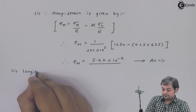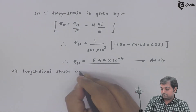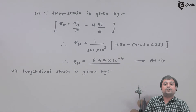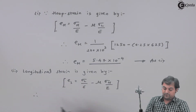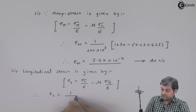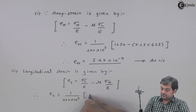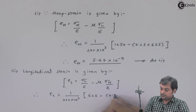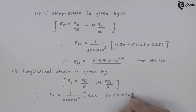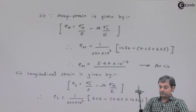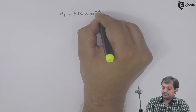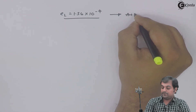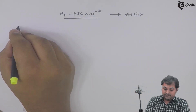Second answer is longitudinal strain. Longitudinal strain eL = (1/E) × (σL − μ × σH) = (1 / 200×10³) × (625 − 0.25 × 1250). From this I get longitudinal strain as 1.56×10⁻⁴. That is my second answer.